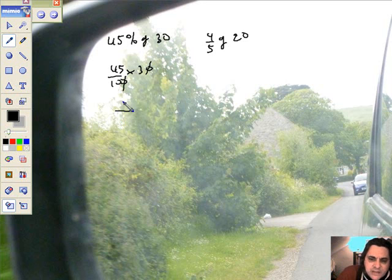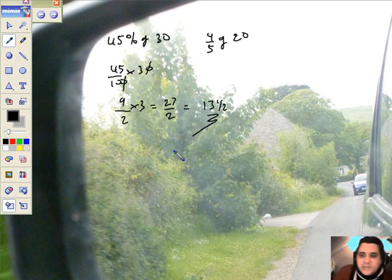45% of £30, let's just lose that for a minute. Five's going into each of these things. Five goes into there nine times. Five goes into there twice times three. So I've got 27 over 2. That's going to be 27 over 2, and that's going to give us 13 and a half.